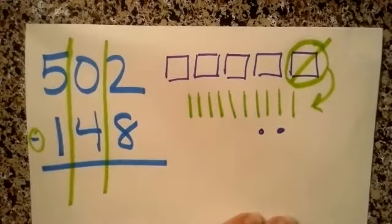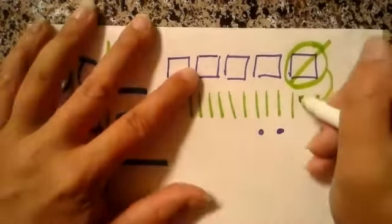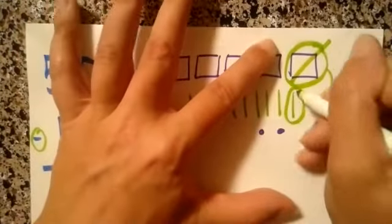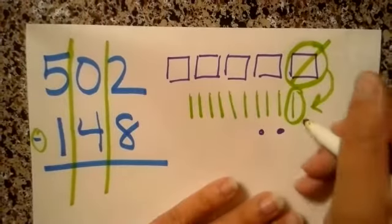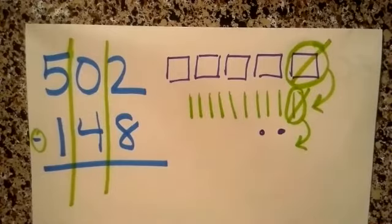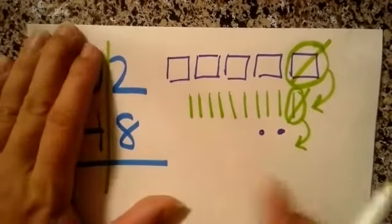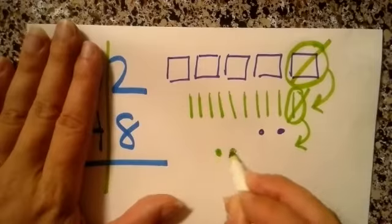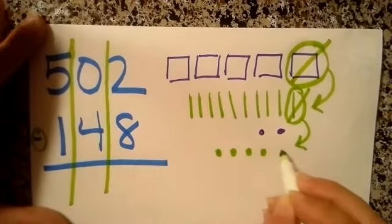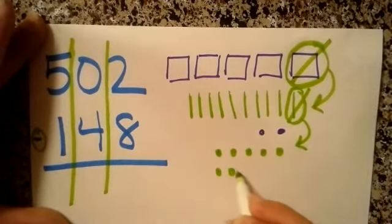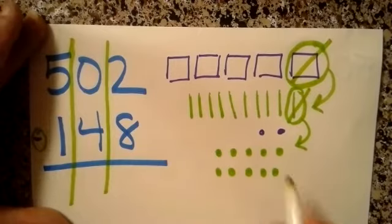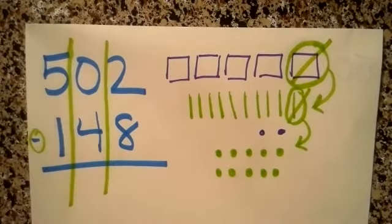And now I'm going to do a double exchange. So we're going to circle a rod. And we're going to cross it out. And we're going to exchange that rod for 10 units. And this was a tricky problem. I'm impressed if you got it.